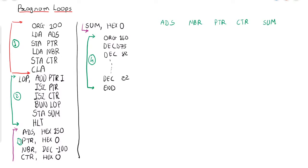The problem definition is that we have 100 operands stored in memory locations 150 through 249. Our goal is to perform the addition of all 100 operands.